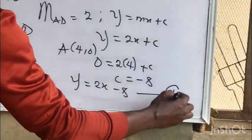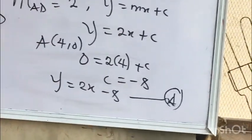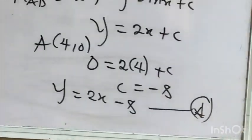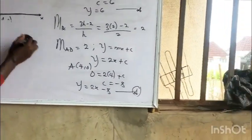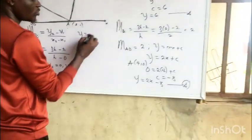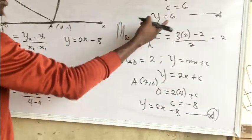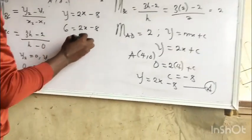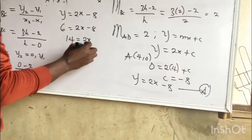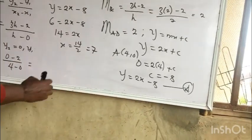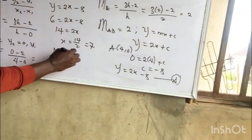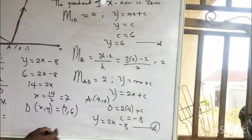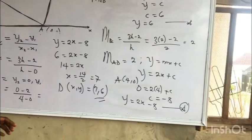Now we solve the two simultaneous equations: y = 6 and y = 2x − 8. Substituting y = 6: 6 = 2x − 8, so 14 = 2x, giving x = 7. Therefore the coordinate of D is (7, 6).